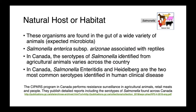We're going to start off by talking about salmonella. These organisms are found in the guts of a wide variety of animals and are oftentimes expected microbiota. They're not abnormal. Their simple presence is not inconsistent with health. However, there are organism-host associations that are recognized. For instance, salmonella enterica subspecies Arizonae is associated with reptiles.